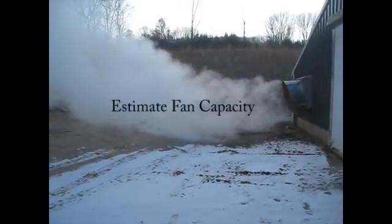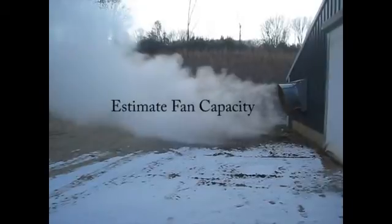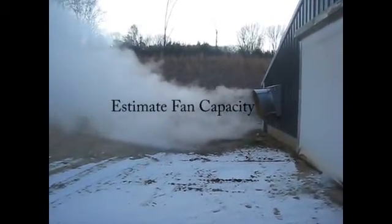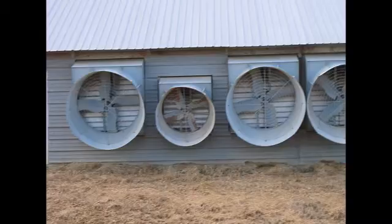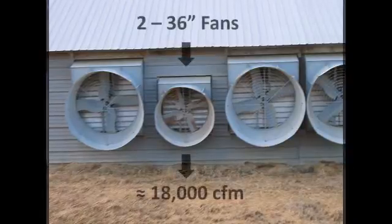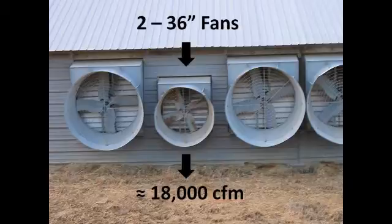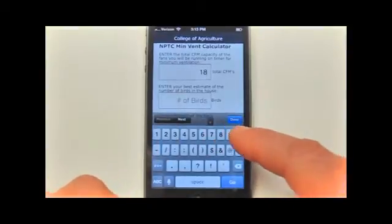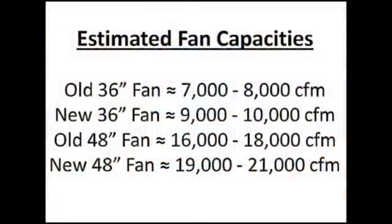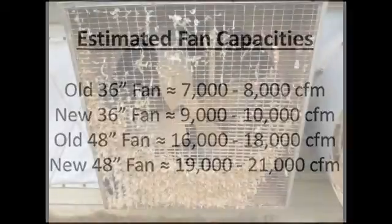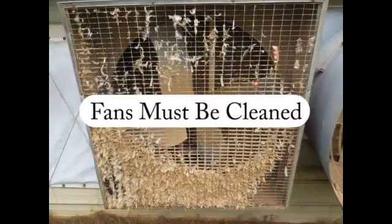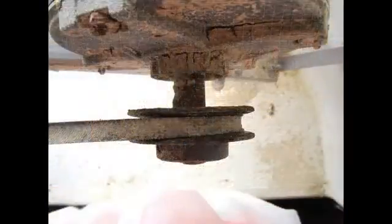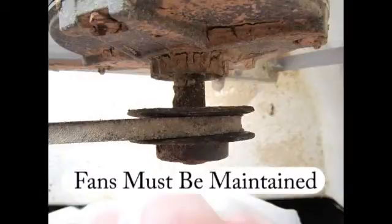The first step to calculate fan runtime is to estimate the total cubic feet per minute of fan capacity that you will be using for minimum ventilation. For this example, we are using two 36-inch fans for a total fan capacity of 18,000 cubic feet per minute. Type 18,000 into the mobile calculator where the blank reads total CFMs. Estimated fan capacity varies based on the size, age, and condition of each fan — routine fan maintenance and how it affects fan output cannot be overstated.